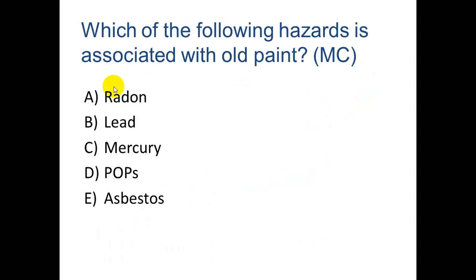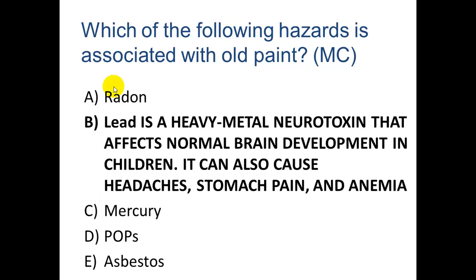Which hazard is associated with old paint? The answer is lead. It is a heavy metal neurotoxin that affects normal brain development in children and can also cause headaches, stomach pain, and anemia. Some people think lead led to the demise of the Roman Empire because they used it in their aqueducts and ceramics. If you're doing ceramics, definitely use a lead-free glaze.